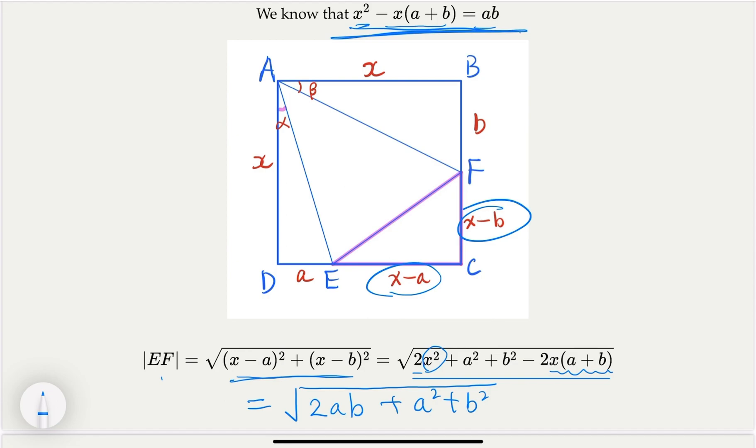Plus a squared plus b squared. That, of course, equals a plus b squared. And if you take the square root, it's going to be a plus b. We have proven that EF is indeed equal to the sum of a, which is DE, plus BF.